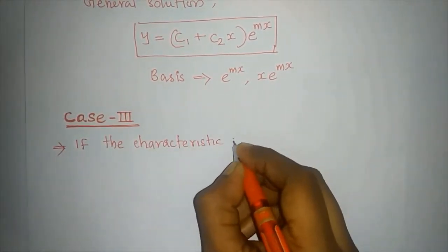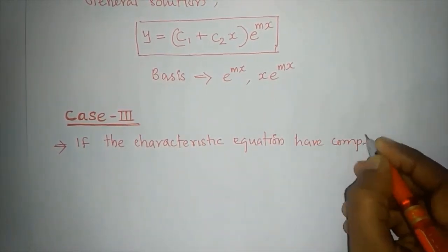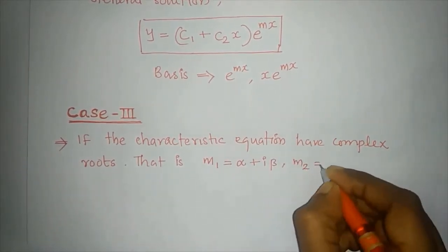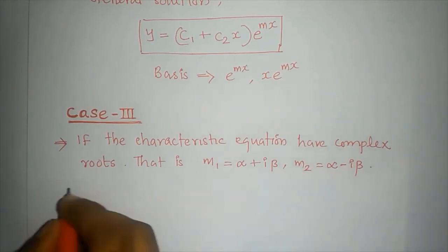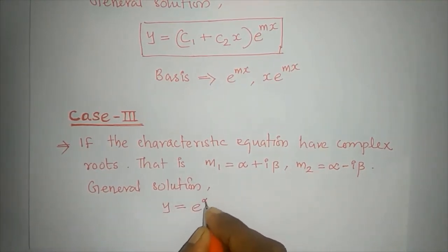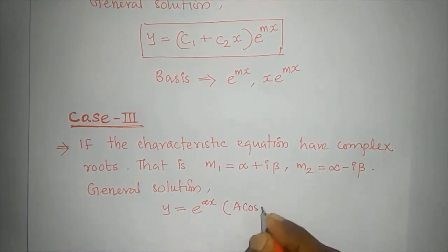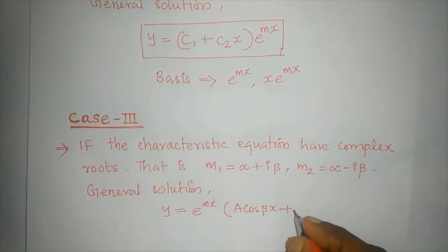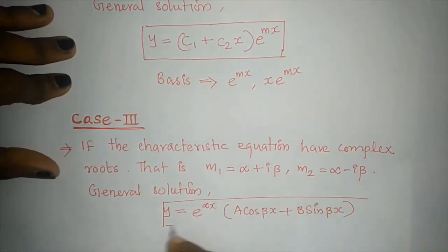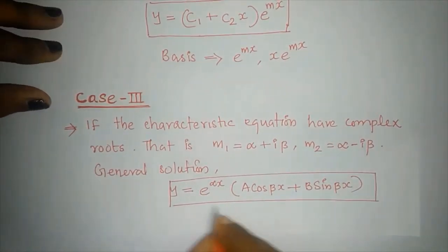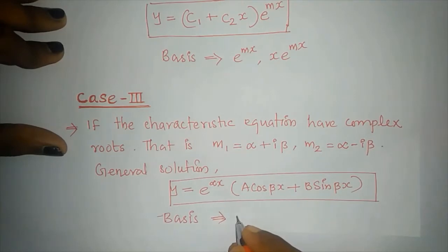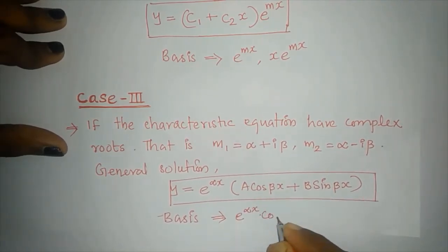Case 3: if the characteristic equation has complex roots — that is, m1 equals alpha plus i·beta and m2 equals alpha minus i·beta — the general solution is y equals e raised to alpha·x times (a·cos(beta·x) plus b·sin(beta·x)). The basis is {e^(αx)·cos(βx), e^(αx)·sin(βx)}.